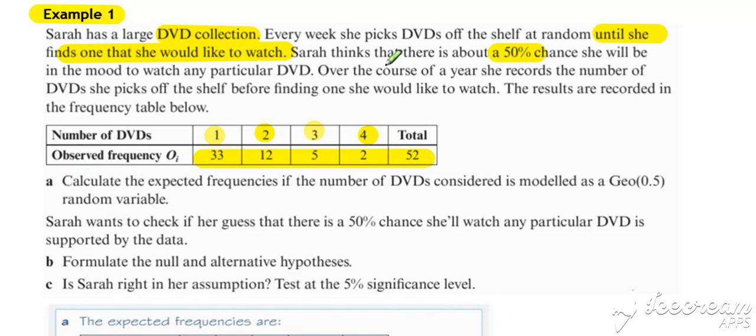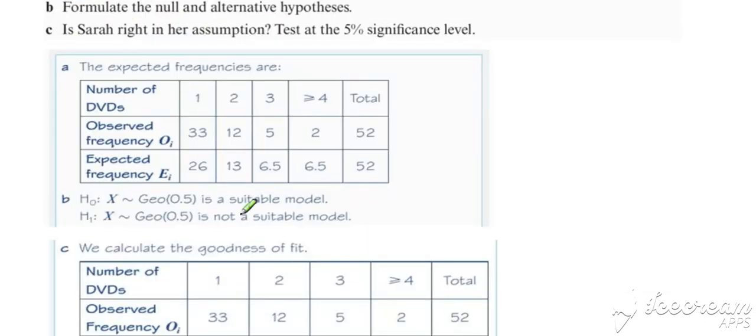So this is a geometric and we want to start off by calculating the expected frequencies. So expected frequencies using a geometric of P value 0.5 is going to be 52 times 0.5 to get X is 1, 52 times 0.5 times 0.5 to get X is 2, and so on.